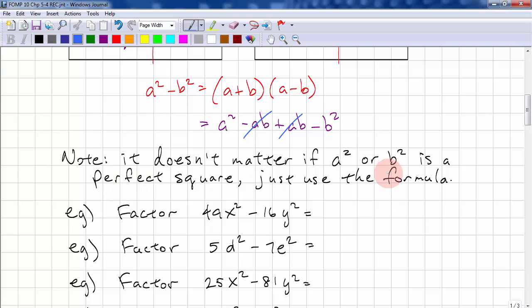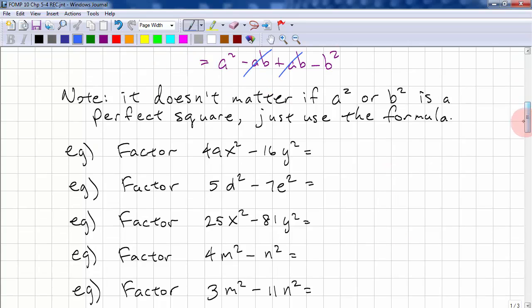And as the note says, it doesn't matter if a² or b² is actually a perfect square. We can still use the formula. So let's quickly factor these. The square root of 49 is 7. The square root of x² is x. The square root of 16 is 4. The square root of y² is just y. We copy the same terms. We change the sign. And we're done.